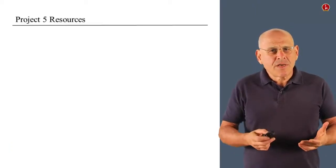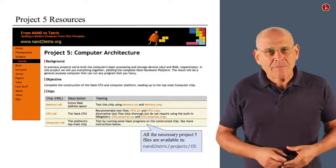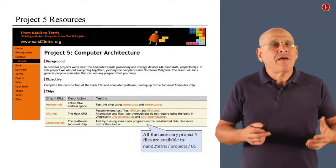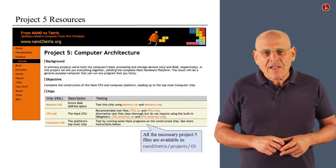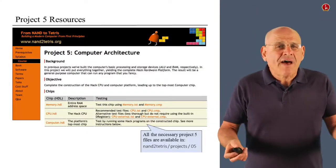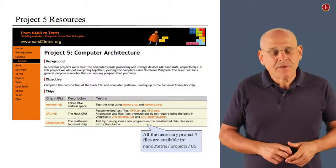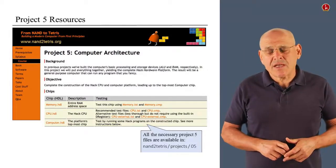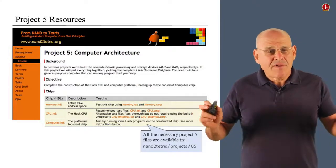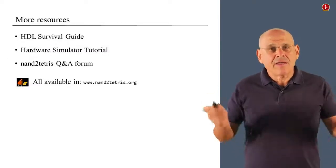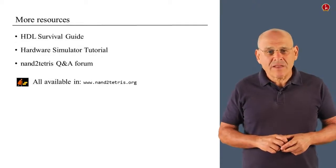In order to do this project, as usual, you have to go to the website, read the project page that gives you all sorts of documentation about the files that you're going to need. All these files are already available on your computer as part of the Nand to Tetris folder. So, you're all set, and you have everything you need in order to, finally, complete the computer architecture.